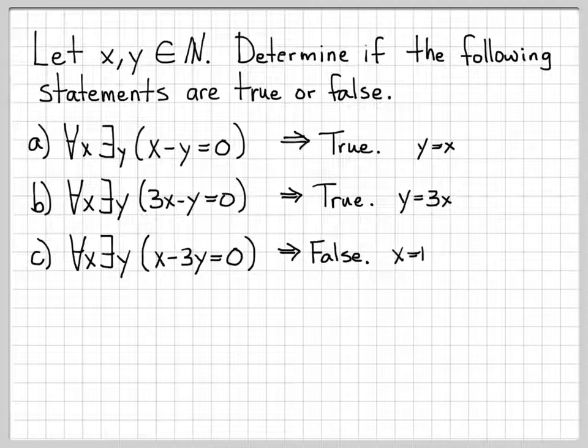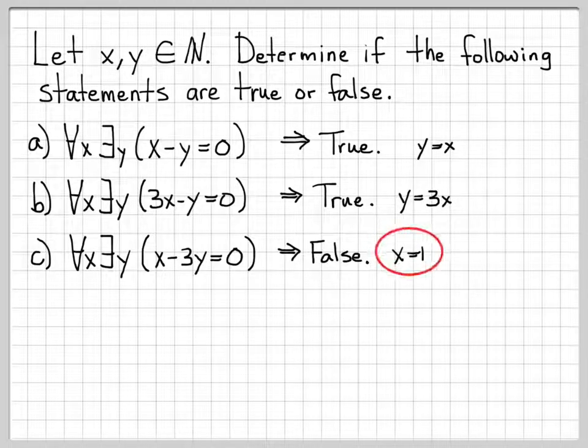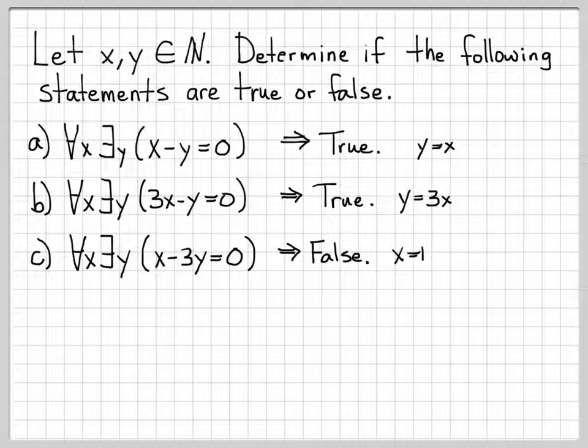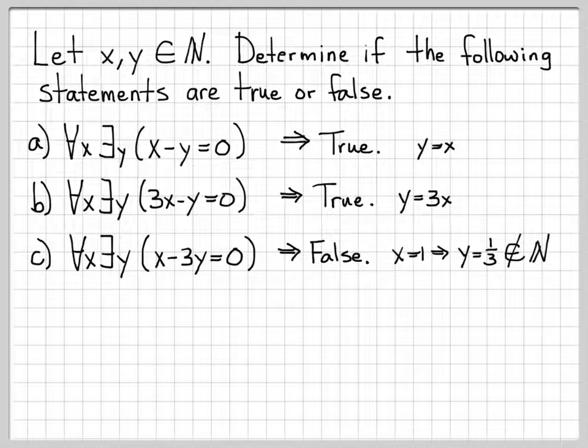And in this specific example, just consider the case x equals 1 that we just talked about. So when establishing a statement is false, all you need to do is find one spot where it fails to be true. So here's our counter example right here, x equals 1, that tells us this is not a true statement. It is false, because in that case, y would have to be equal to a third, which is not in the natural numbers.